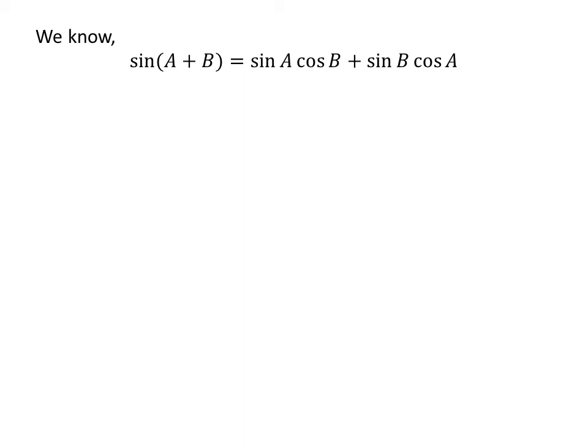As we know, the trigonometry identity sine of A plus B is equal to sine of A times cosine of B plus sine of B times cosine of A.